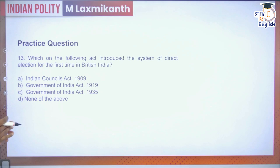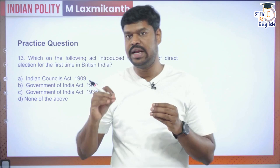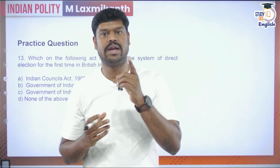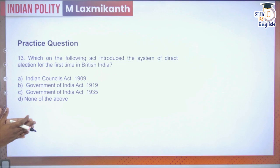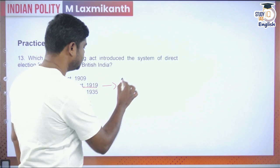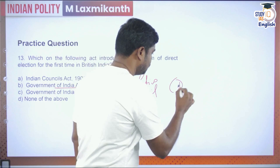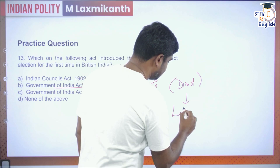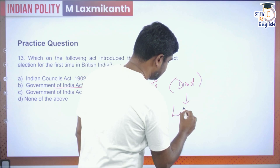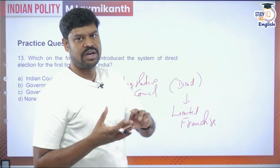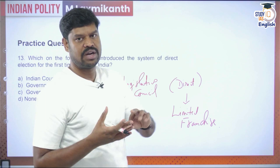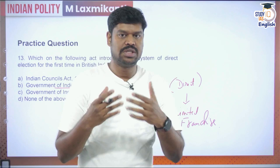Question 13: Which act introduced the system of direct election for the first time in British India? Indirect election was introduced in ICA 1892 and extended in ICA 1909. Direct election was introduced for the first time — with limited franchise — by the Government of India Act 1919. Most members in both the Union Legislature and Provincial Legislatures were elected by direct election, but voting rights were restricted to those meeting criteria such as ability to pay taxes and property ownership.